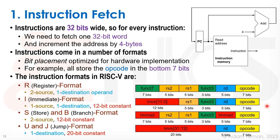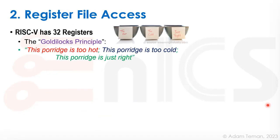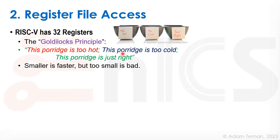The second step is register file access. RISC-V has 32 registers — that's the Goldilocks principle. Different architectures have different numbers, but RISC-V designers settled on 32 as the just-right amount. A smaller number of registers allows faster access, but too few means your code grows larger and you have to store things into memory more often. So 32 registers is the Goldilocks point where the porridge is just right.